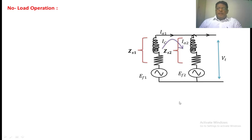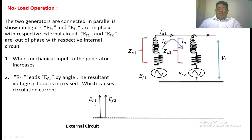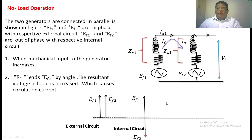No-load means we are not connecting any load. If you see the first diagram from external, EF1 is equal to EF2. Further, EF1 is also equal to EF. Applying KVL, EF1 and EF2 are in opposite directions.